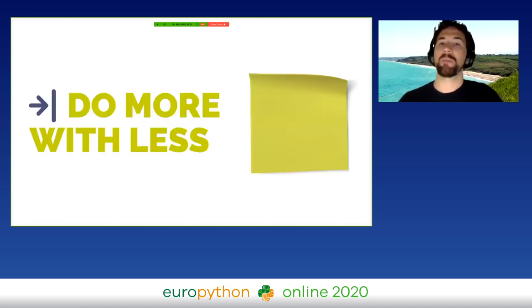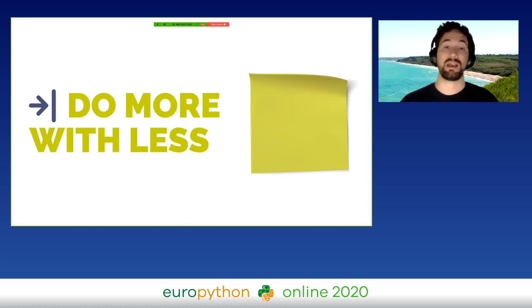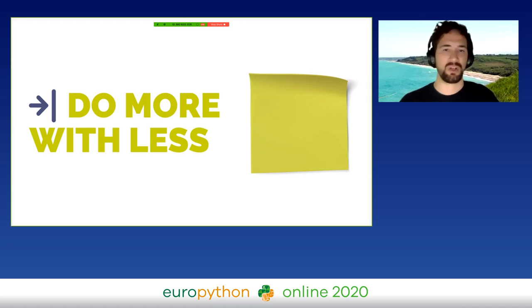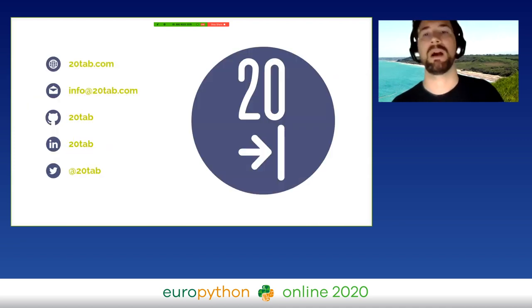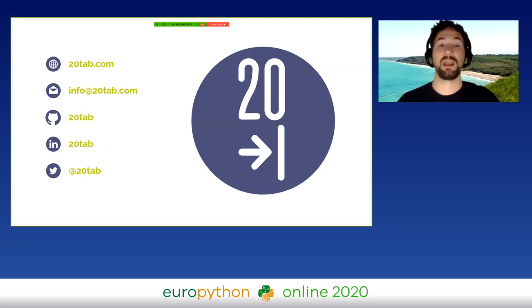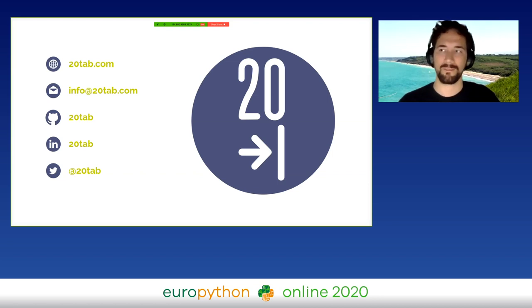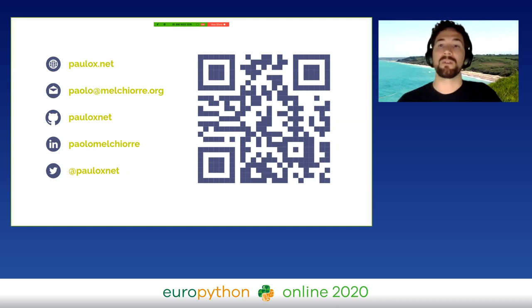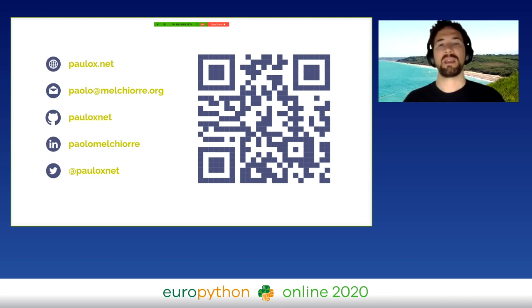I hope I've been able to show how it's possible to develop a more complete full-text search using less software in the stack. Doing more with less is the motto of 20Tab, and it's our version of Pythonic. You can find more about our open-source projects and our Python work through our social media and website. To find out more about my work with Python and Django, you can use my contacts, and using the QR code, you can download this presentation from my website. Thanks again and enjoy the next talk.